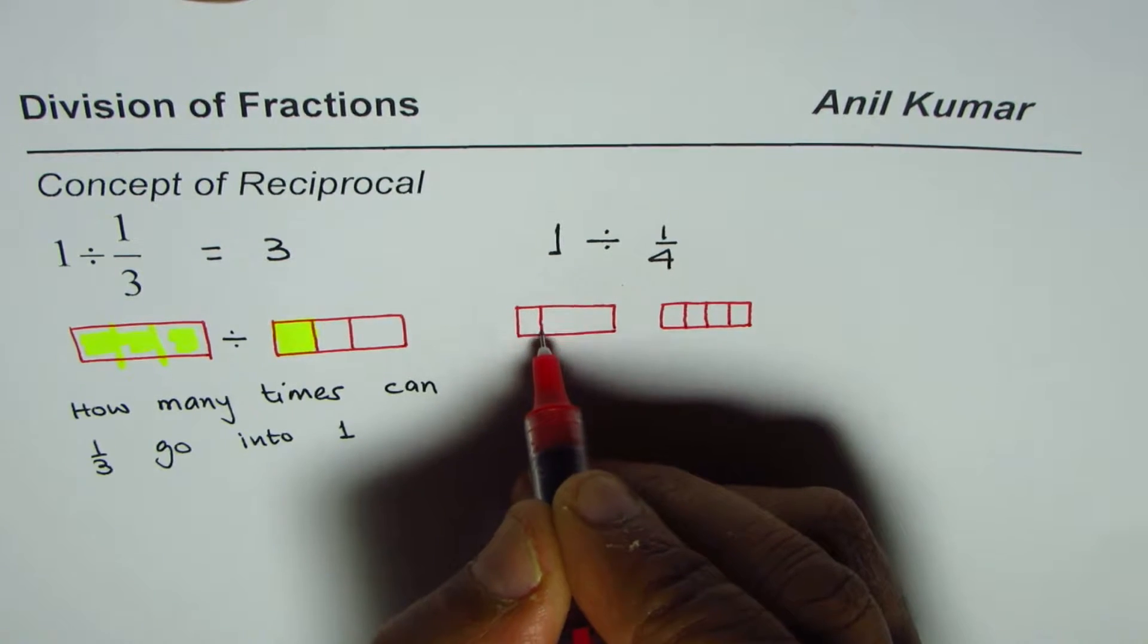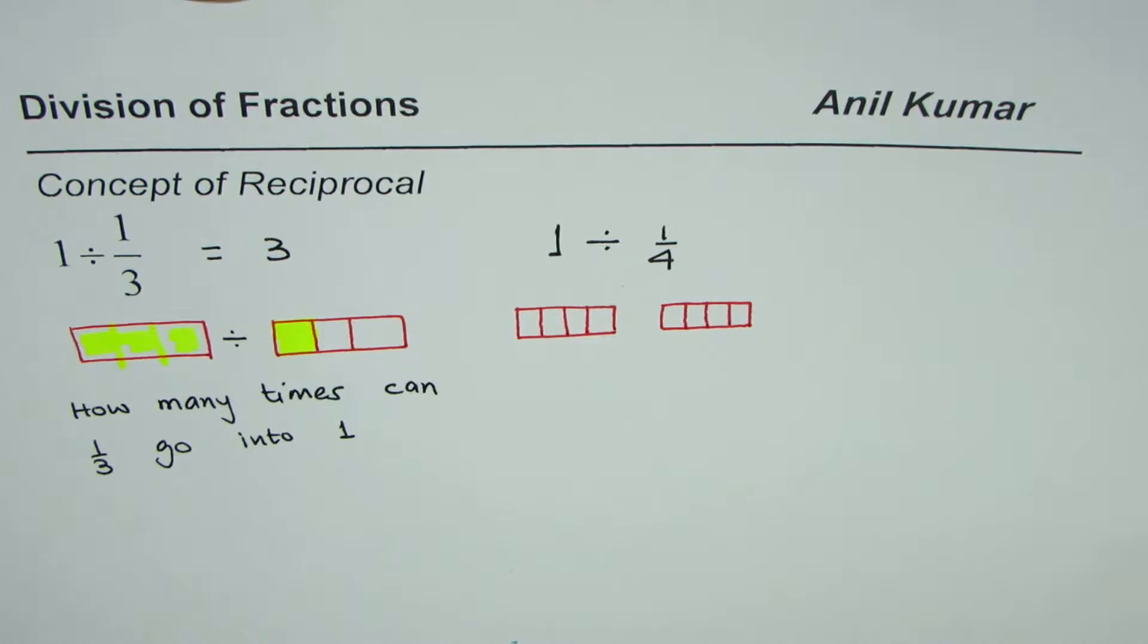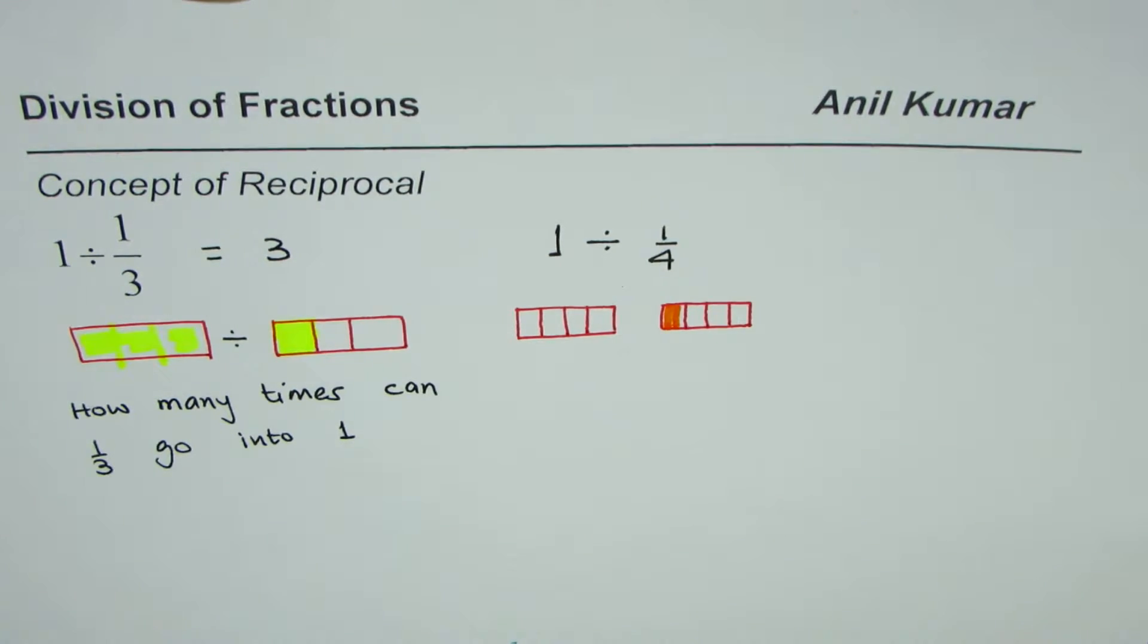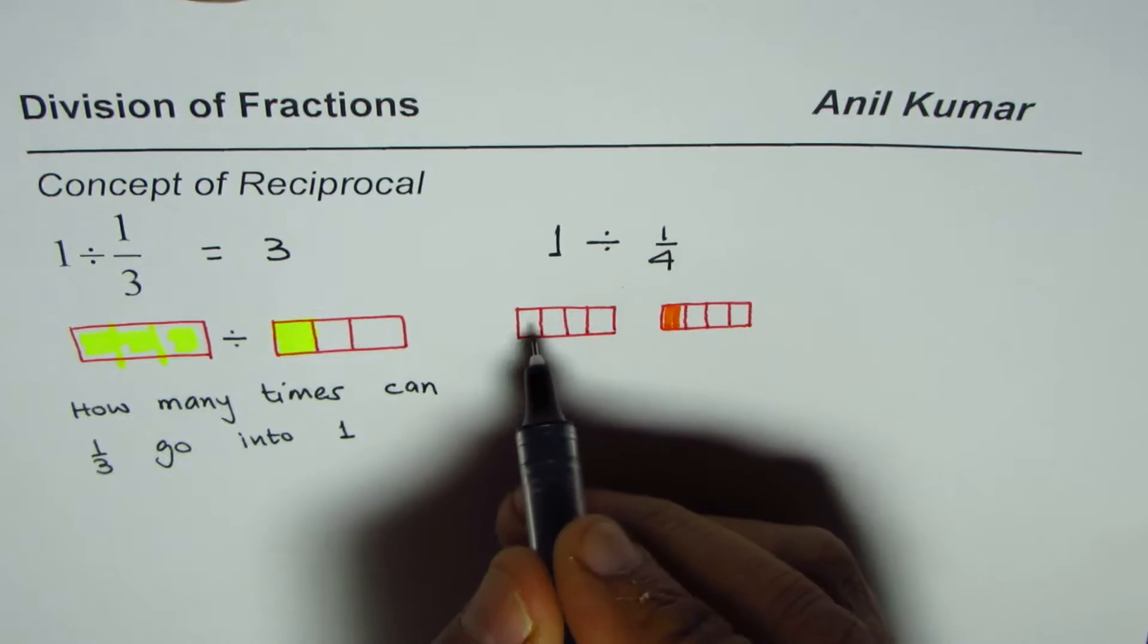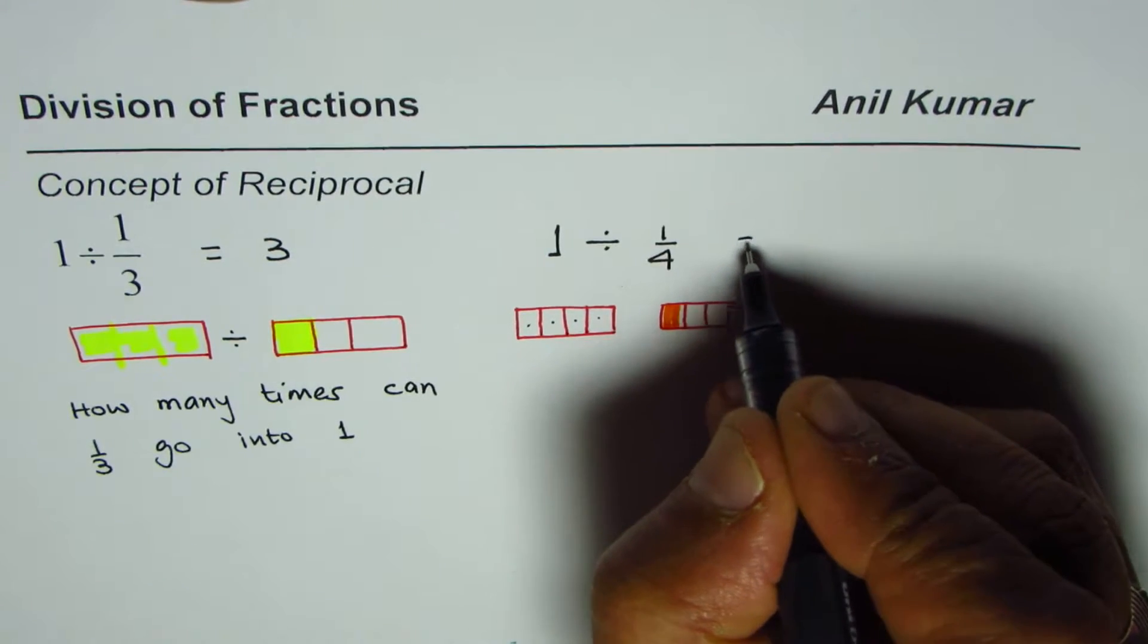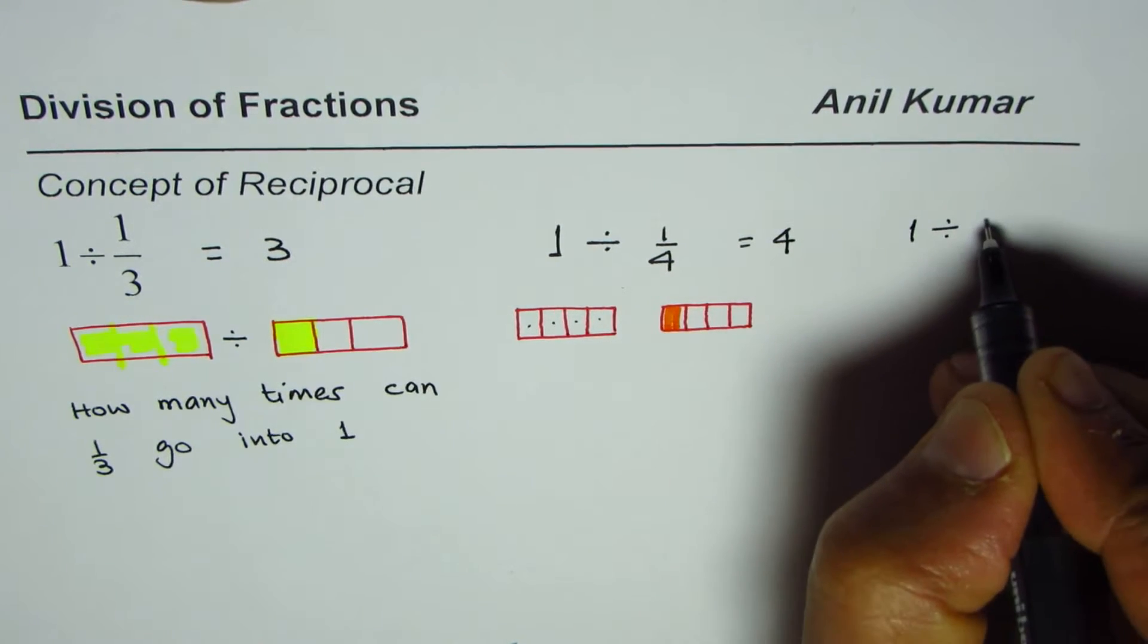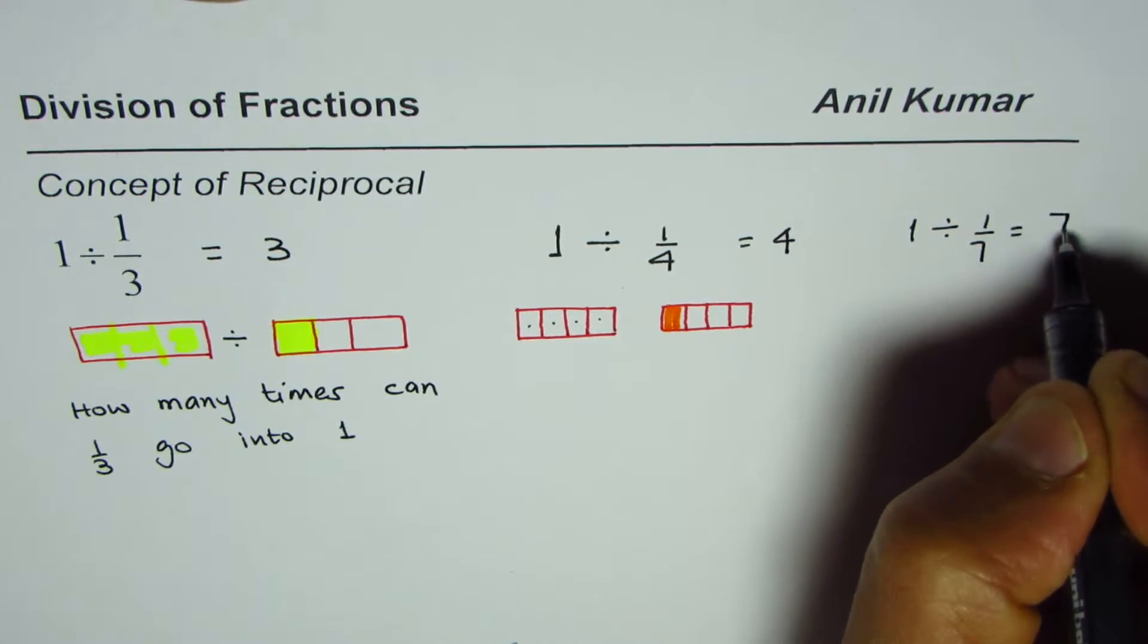Let me divide this also into four parts so that we can easily see our result. So if I shade one fourth of this, which is this much, and ask the question how many times will one fourth go into one, we can say one, two, three, four times it can fit and therefore the answer is four.